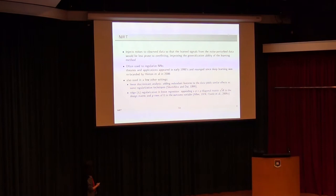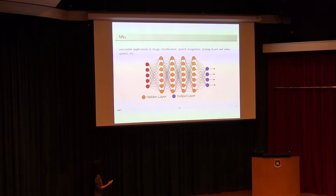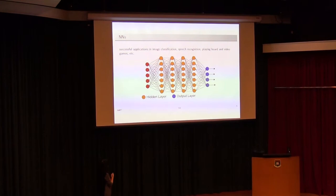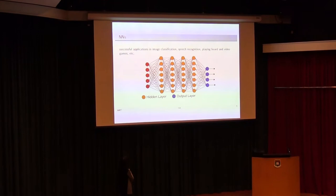Now I'll jump into the first part: noise injection in neural networks. This is a simple feedforward fully connected neural network — you have input nodes, output nodes, and a bunch of hidden layers. Each node is connected by edges called weights. In a fully connected neural network all edges are unknown, so a very large neural network can have millions of parameters to train with a limited dataset.